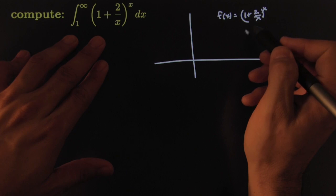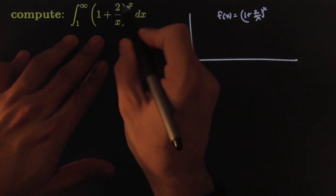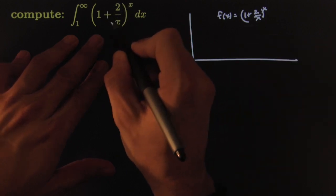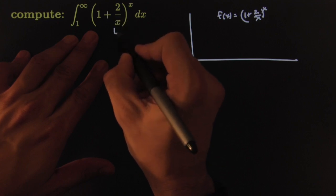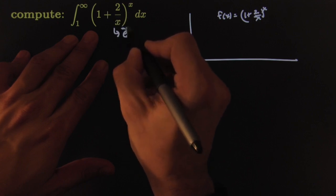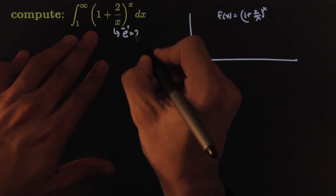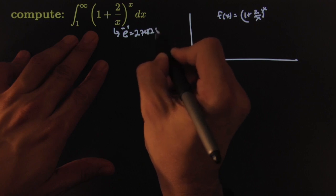It turns out that this is a really famous expression. As x gets larger and larger, this number tends towards e, the famous Euler number 2.71828...